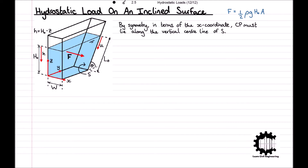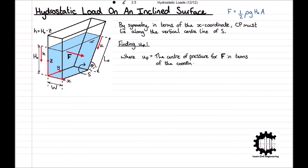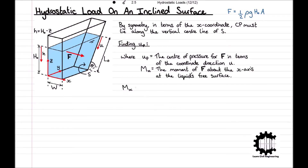To calculate the depth of Cp below the free surface in terms of u, we will use moments about the free surface. With up denoting the centre of pressure for the load f in terms of coordinate direction u, and mx denoting the moment of f about the x-axis at the free surface of the liquid, we have mx equals up times f. And then using the hydrostatic pressure distribution, we can find mx by mx equals the surface integral of u times p with respect to a. Combining both of these, we get f times up equals the surface integral of u times p with respect to a.